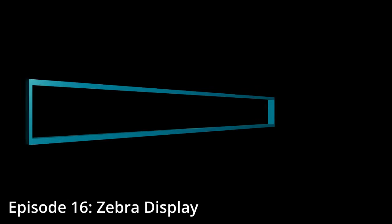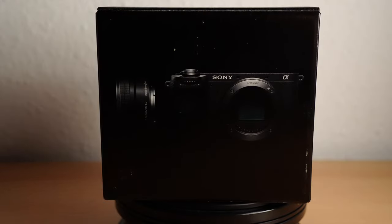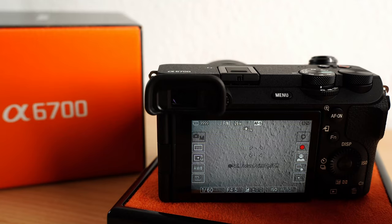Hello and welcome. In this video I show you how to activate overexposure display, or zebra mode, in your Sony Alpha 6700, so it's way easier to see which areas of your photos or videos are too bright.